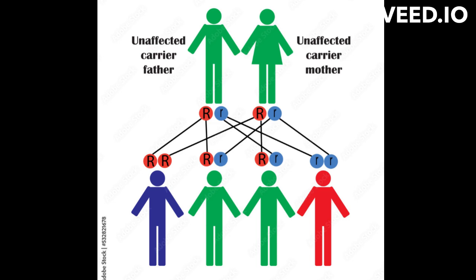Another example is the study of sex-linked inheritance. Sex-linked traits are determined by genes located on the X or Y chromosomes. X-linked traits are inherited from the mother and Y-linked traits are inherited from the father. Hemophilia is an example of an X-linked disorder. It is caused by a mutation in a gene located on the X chromosome and is typically passed down from mother to son.